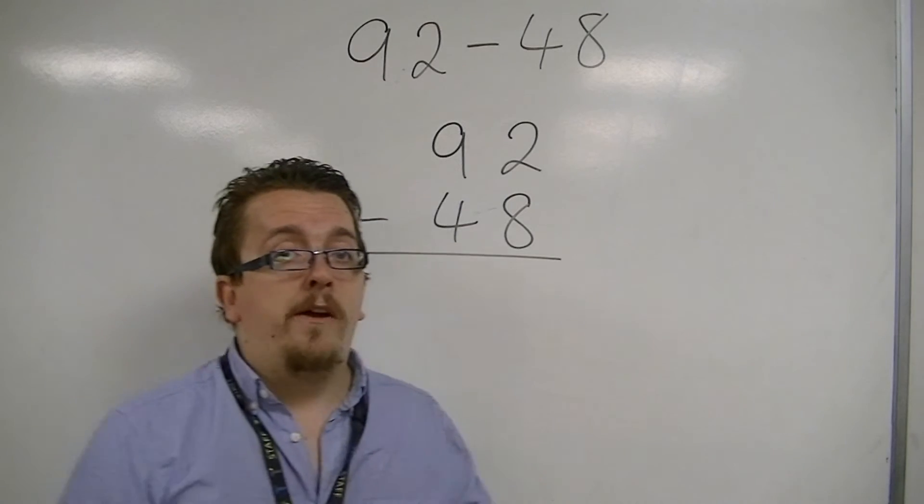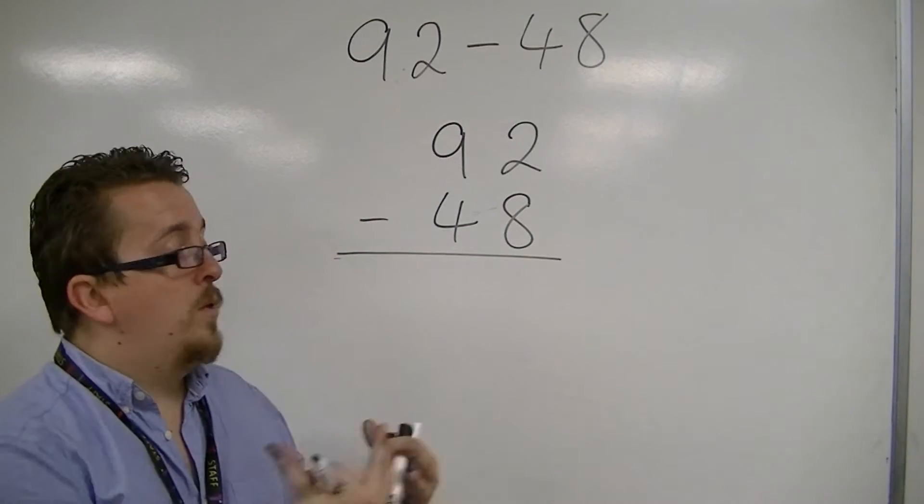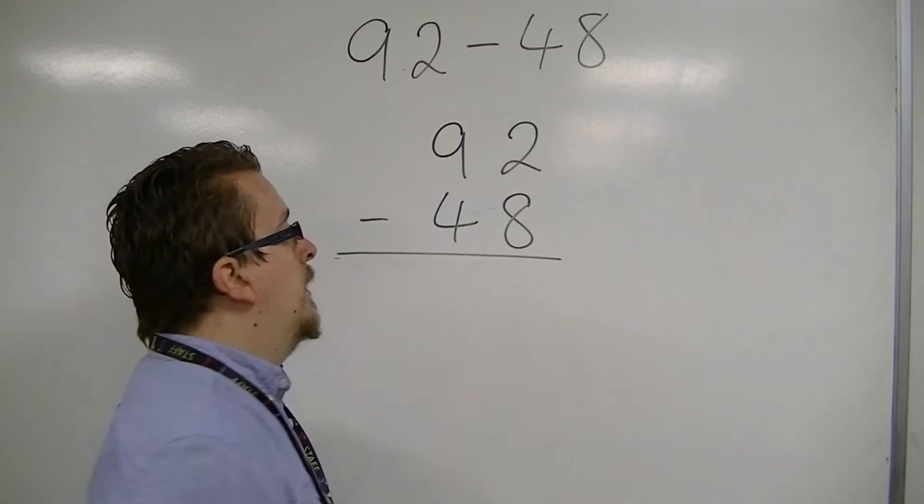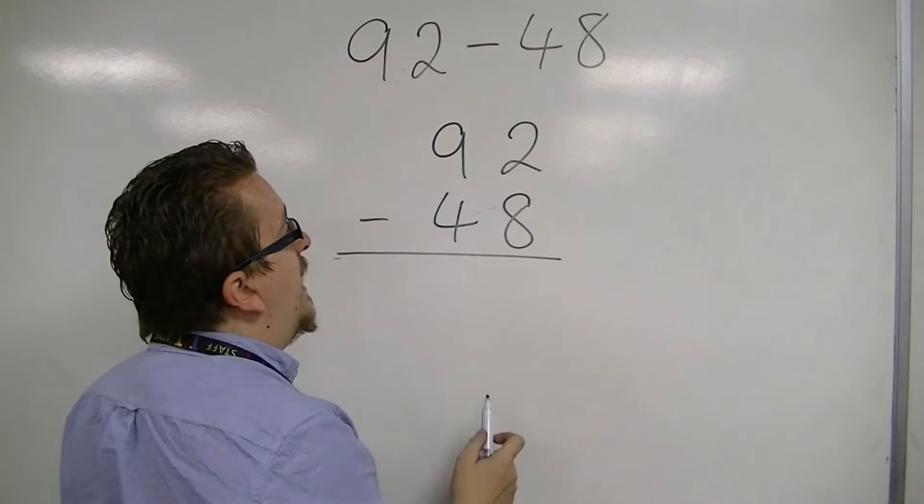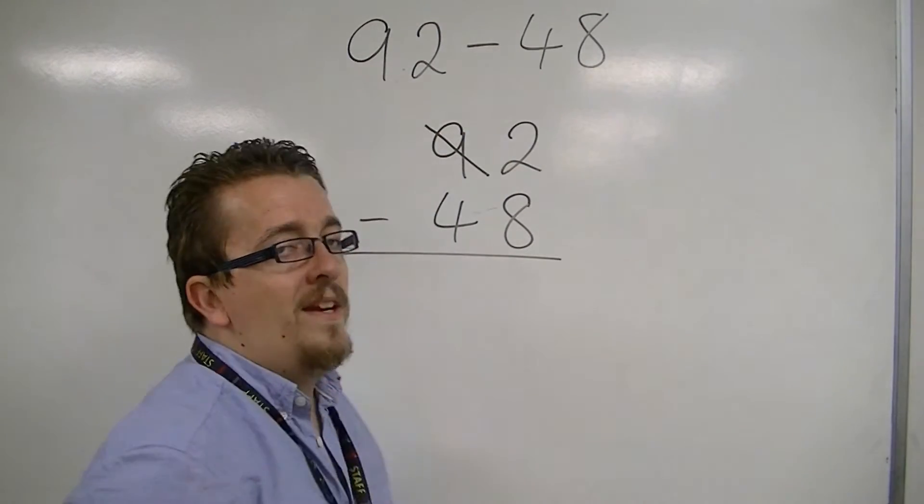Effectively, if you know where we're going with GCSE, then you'll know that we're going to go into negative numbers. But not in this case. Because I can't do 2 take away 8, I am going to borrow 1 from the 9. So it's effectively borrowing 10.